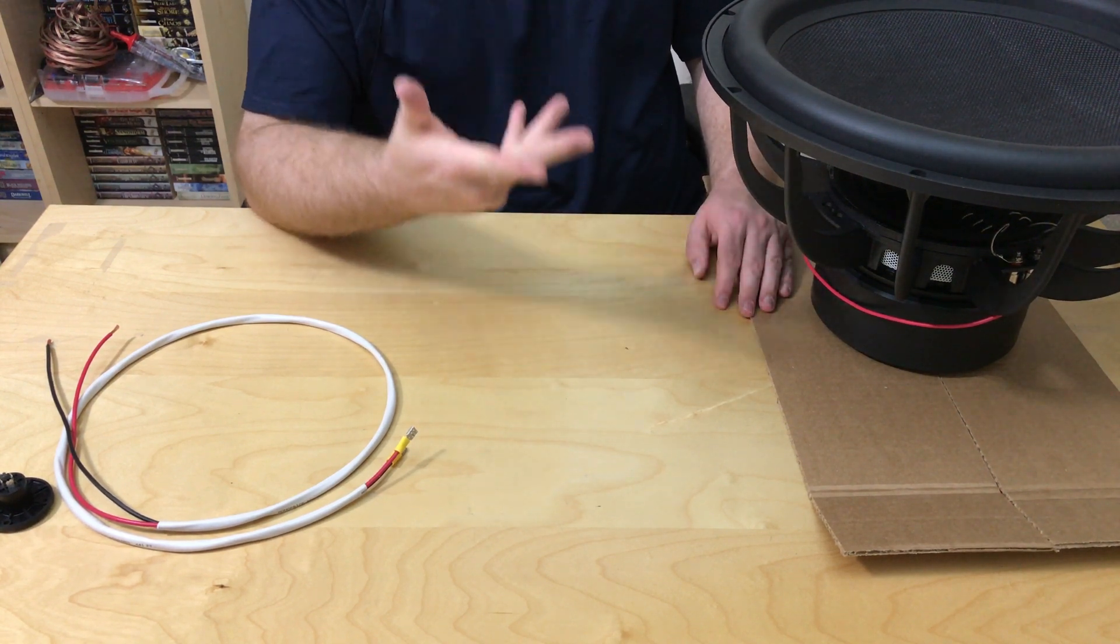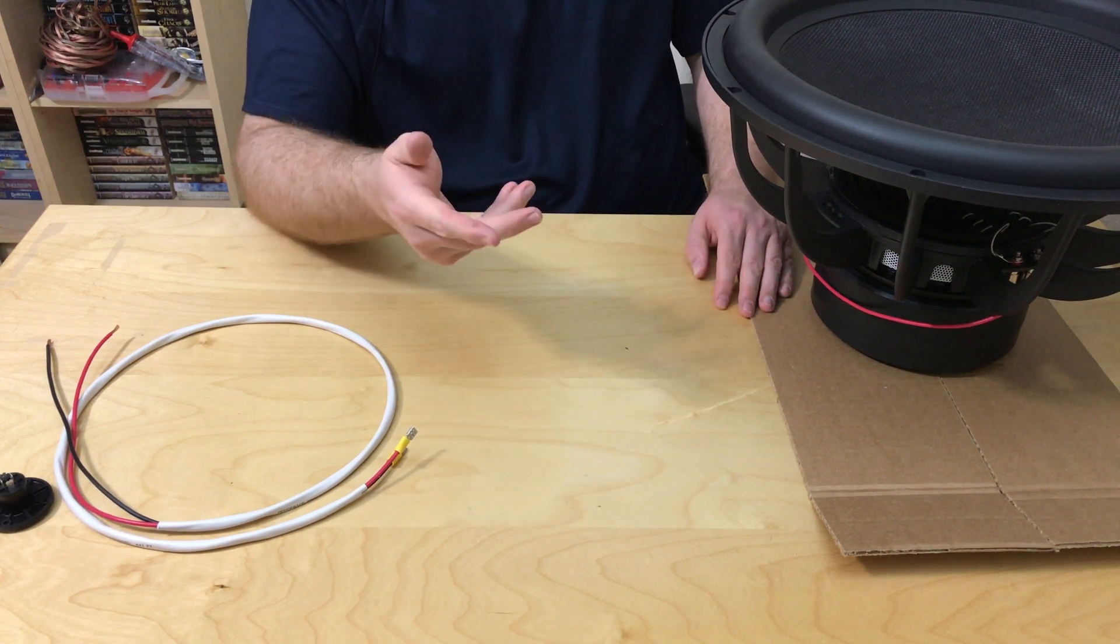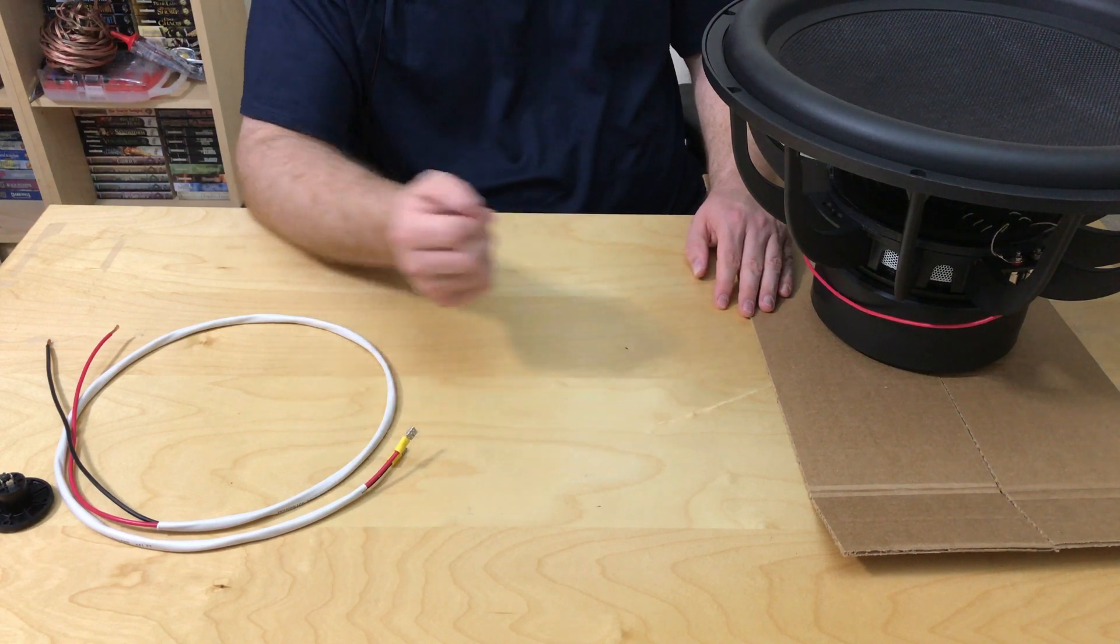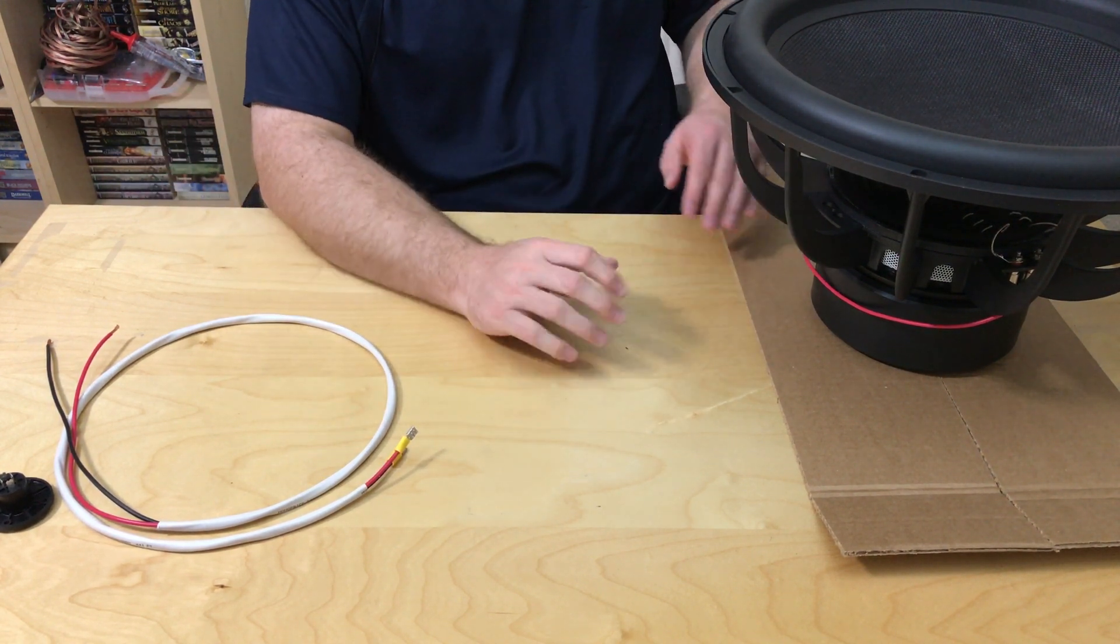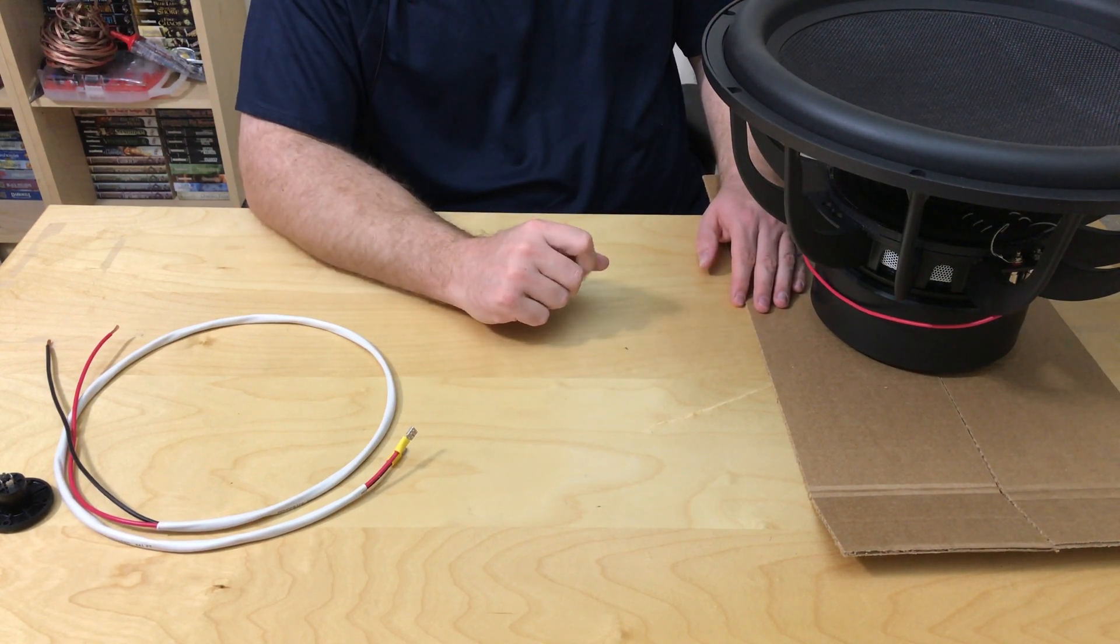On the flip side, if you wire these in series, then you raise the ohm load. So basically, if you've got two 2 ohms, it doubles it to 4. If you had two 4's, it'll take it up to 8 as an example. And that is a load that amplifiers typically can handle, a 4 ohm load.